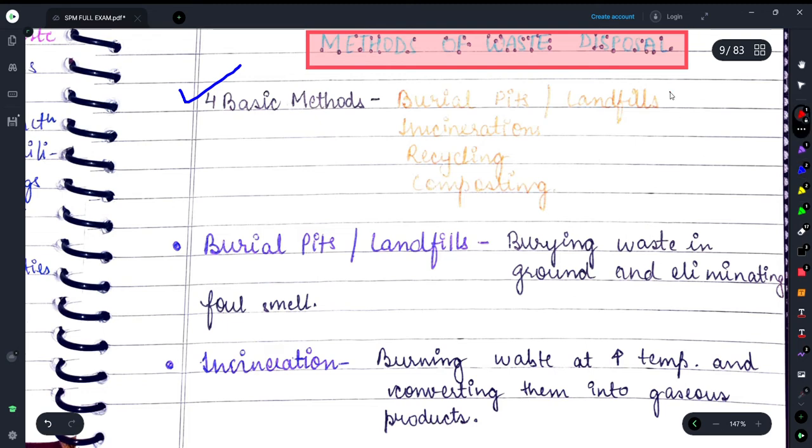The first one is burial pits or what we call landfills. Incineration is another process that can be used. Recycling and composting, these are mostly the four methods.